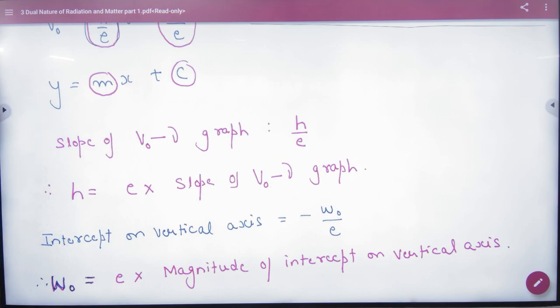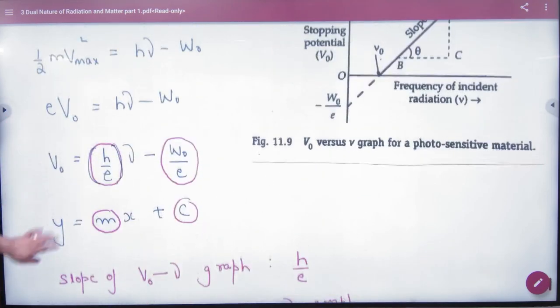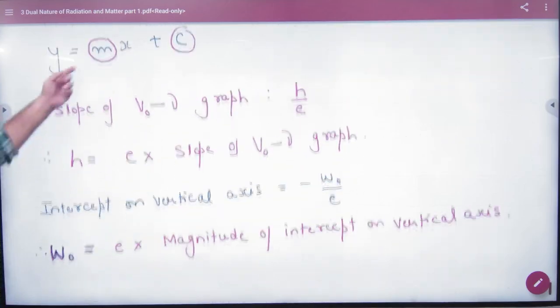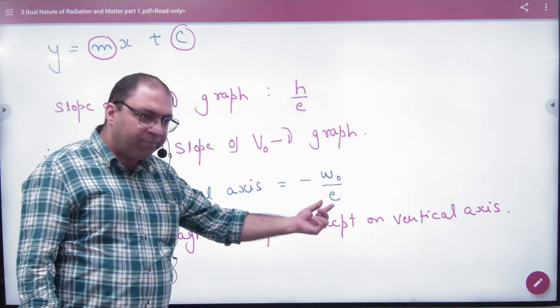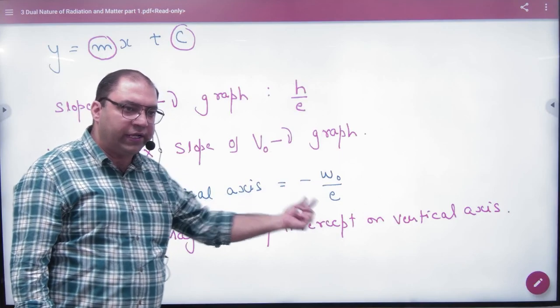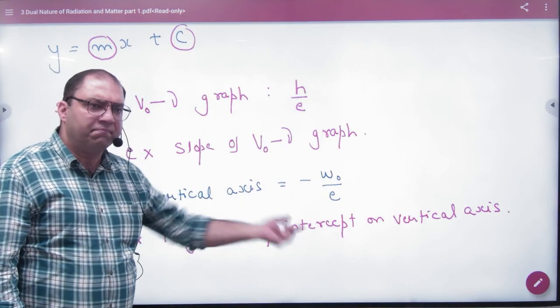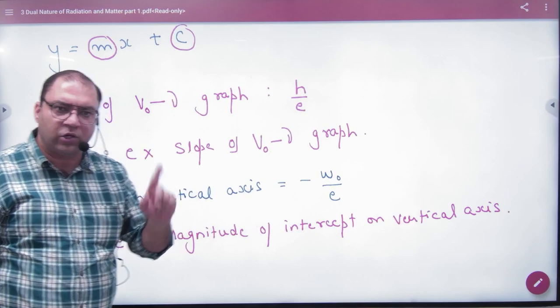The first result. And if you have to find work function, then what is intercept? So you will write intercept, which equals W₀/e. Work function is e times intercept magnitude. We use magnitude because work function is not negative.